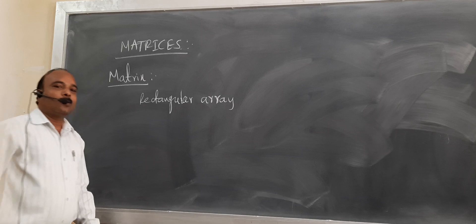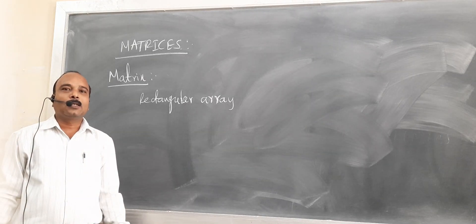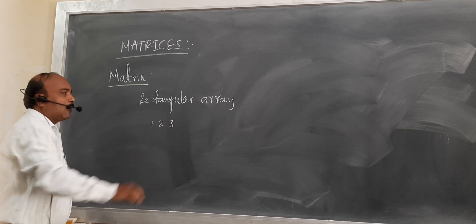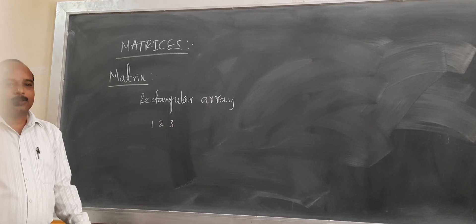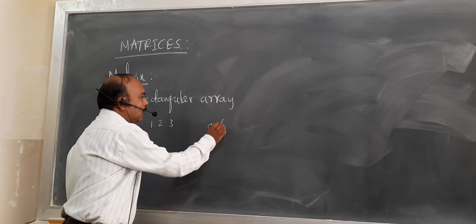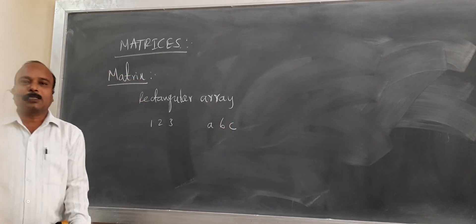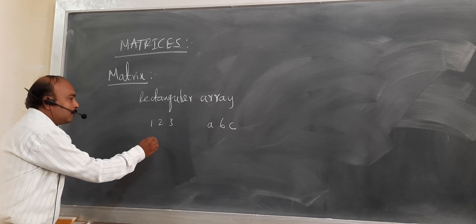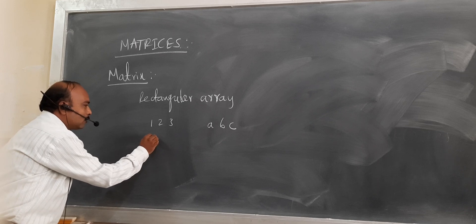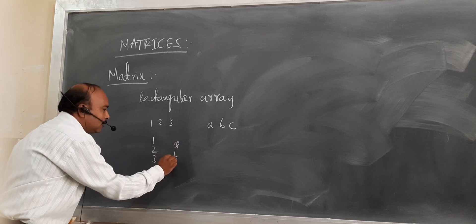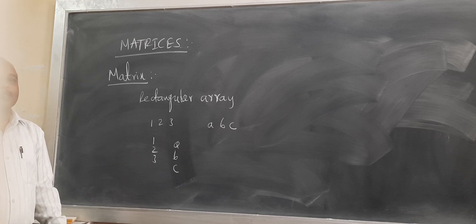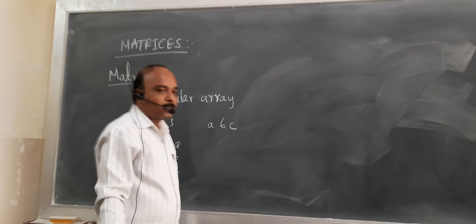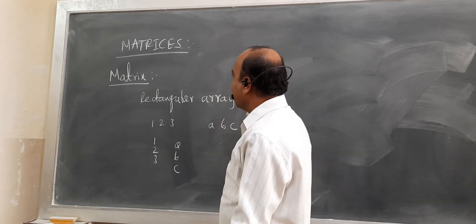A rectangular array is an arrangement of objects in rows and columns. Suppose you write the objects arranged in the rows. Similarly, if you write the objects in the columns — 1, 2, 3, A, B, C — they are called the objects written in the columns. Similarly, we can discuss the definition of a matrix.